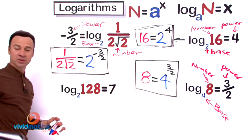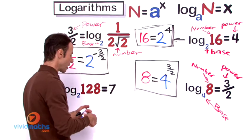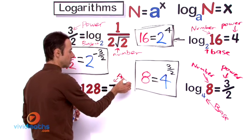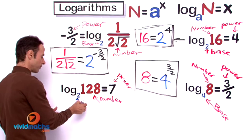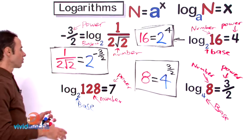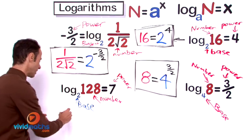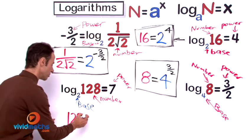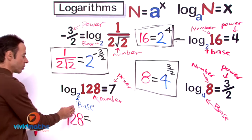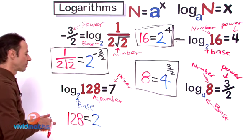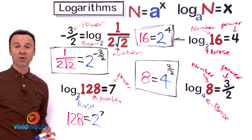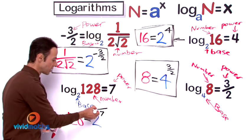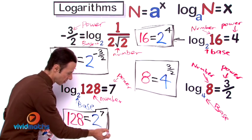Let us try one more example. We have log base 2, 128 equals 7. The 7 is the power and 128 is the number. Putting it all together in exponent form: 128 equals 2 to the power of 7. You can check that on your calculator — 2^7 is equivalent to 128.